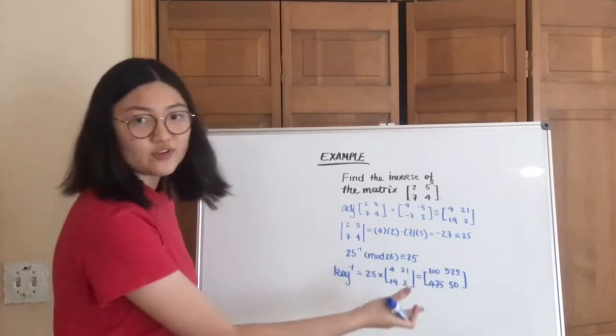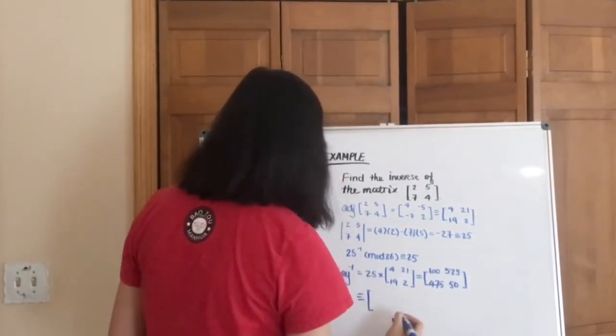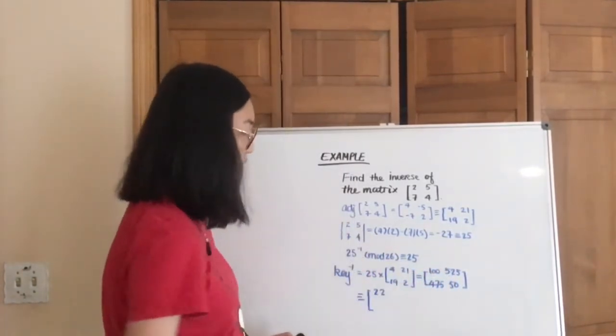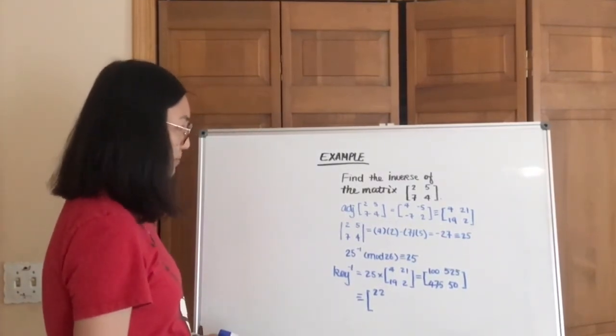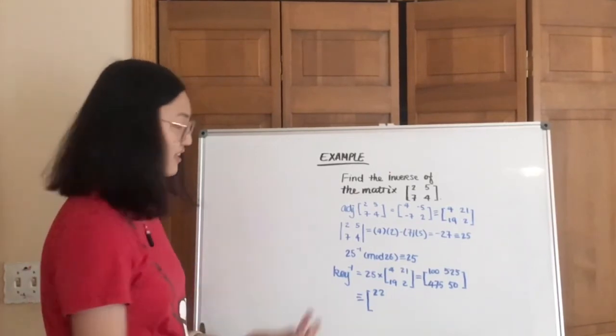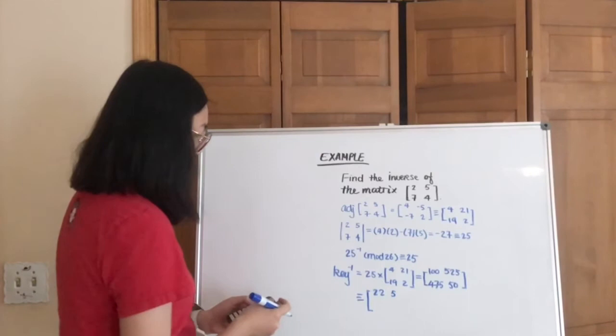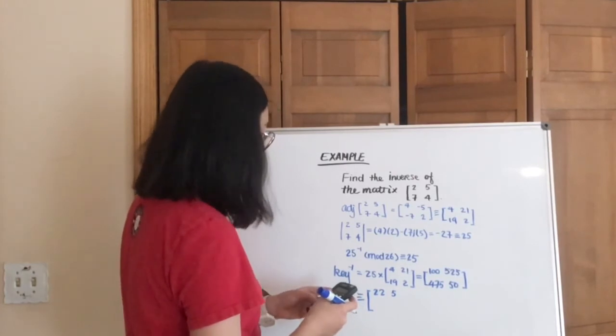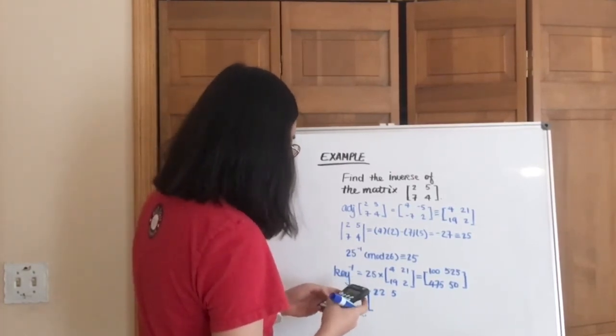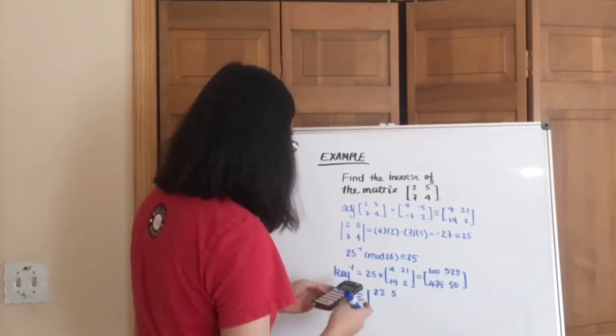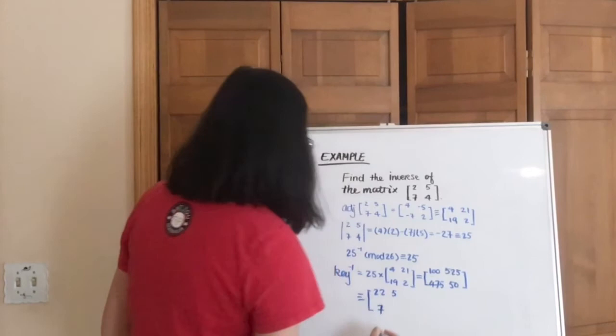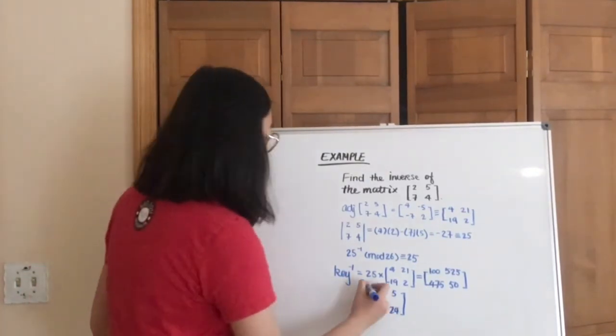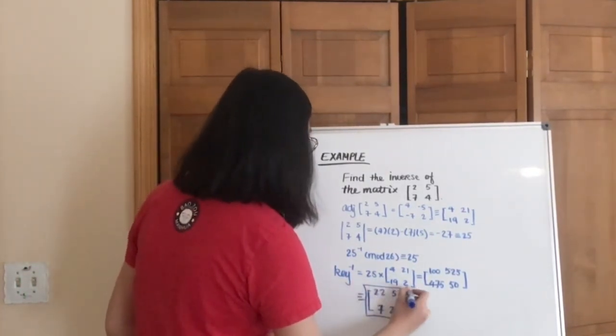And then we're going to transfer that back into mod 26. So 100 is going to give us 22. 525, you can see that there's a 520 in there we can take right out because that's a multiplication that's divisible by 26. So after that, it's going to be just 5. 475, you can do it however you want. So 475 divided by 26, and then minus whatever value, then multiply it by 26 again. It's going to give us 7. And then 50 is 24. And that's your inverse of the matrix [2, 5, 7, 4].